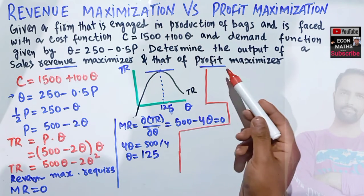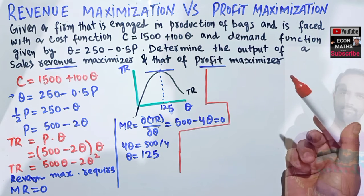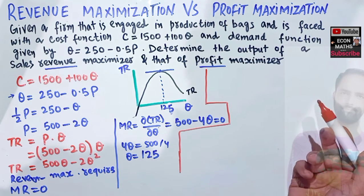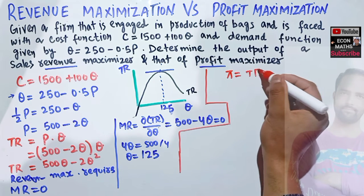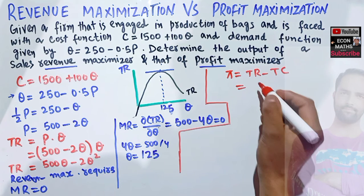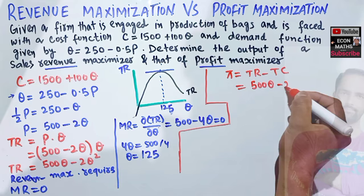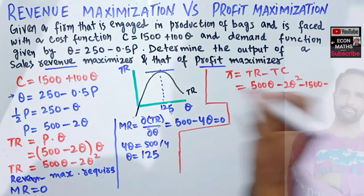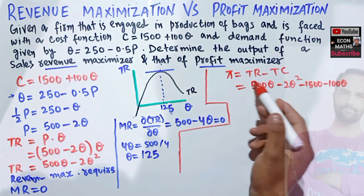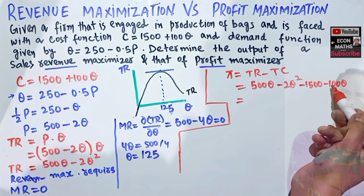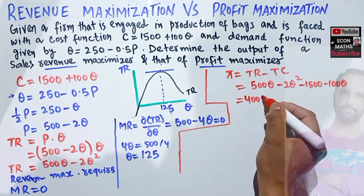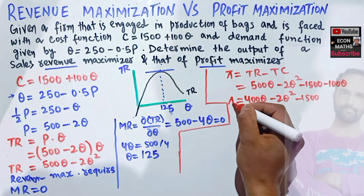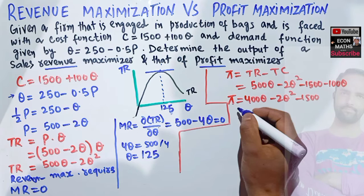For the second part, we find the profit-maximizing output. Profit equals total revenue minus total cost: π = (500q − 2q²) − (1500 + 100q). Simplifying: 500q − 100q = 400q, so the profit function is π = 400q − 2q² − 1500.